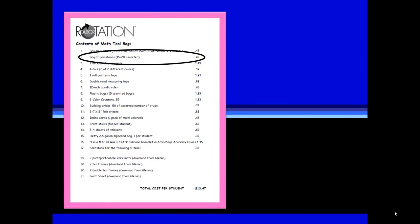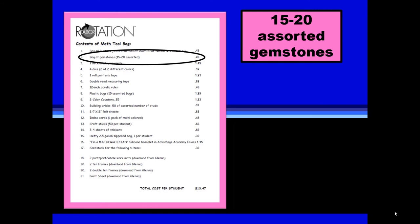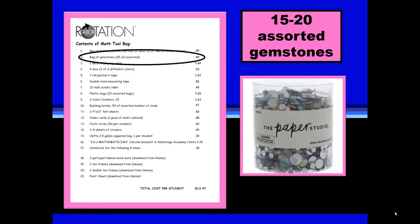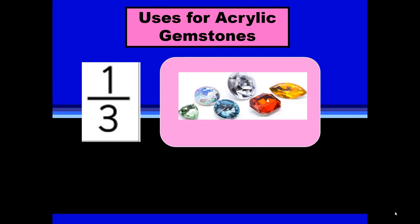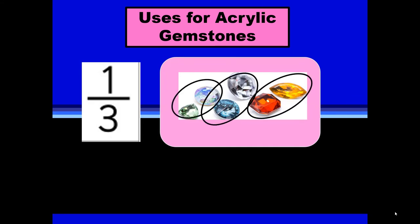Another item that is appealing to students of all ages: 15 to 20 assorted acrylic gemstones, also available in big buckets so you can easily divide them amongst your students. Let's look at one concrete illustration of using gemstones to determine the fractional part of a number — equal sets. There are three equal divisions, and one of those has two gemstones, so one-third of six you can concretely see is two.